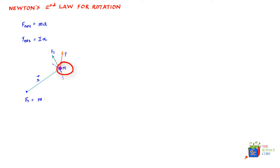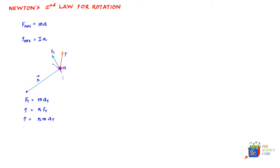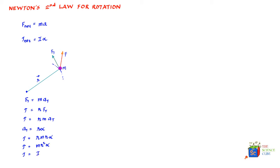For such a body, the tangential force F_t equals mass times tangential acceleration. We know torque equals r × F_t, so substituting F_t gives torque = r × m × a_t. Since tangential acceleration a_t = r × α, we get torque = m r² α. Since m r² is the moment of inertia I, torque = I α — which is what we wanted to prove.